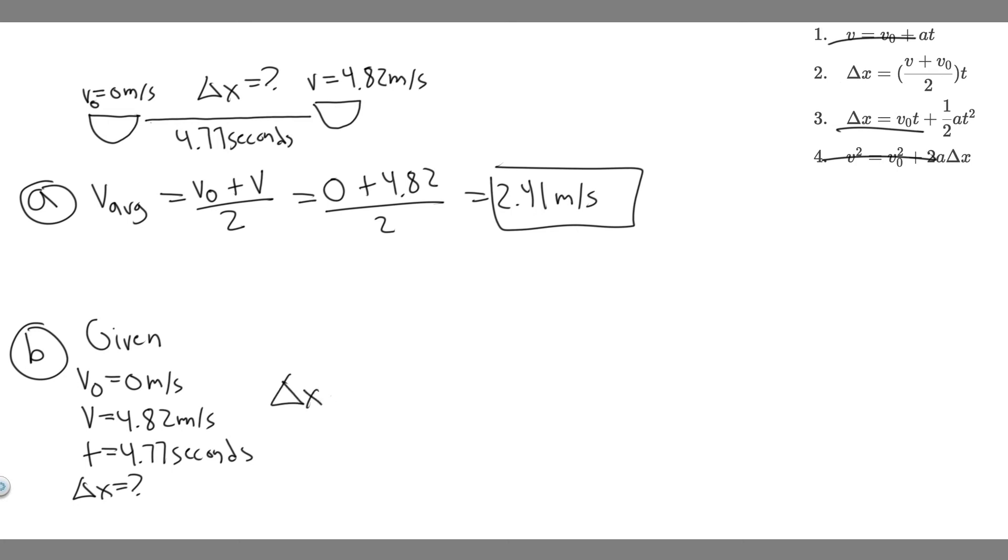We're just going to say delta X equals V plus V sub zero over 2, and then multiply by T. And what you should notice, V zero plus V over 2 is this right here, it's exactly what we solved for, 2.41. So I'm actually not going to go through it - just know it's 2.41, because V sub zero plus V over 2 is the same thing. We're using the same numbers, so it's just going to be 2.41 times T.